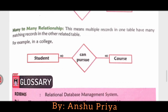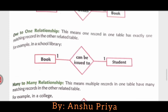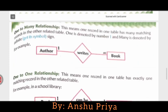Many-to-many relationship means multiple records in one table have many matching records in another related table. So I hope you understand all three types: one-to-many, one-to-one, and many-to-many relationships.